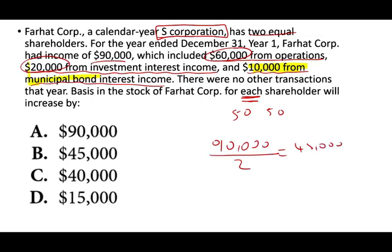So be careful here. A classic mistake is that a student would select $90,000, but the question asks for each shareholder, so we have to be very careful.